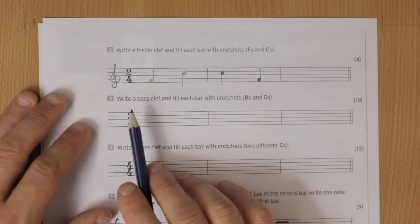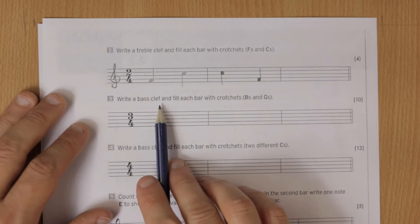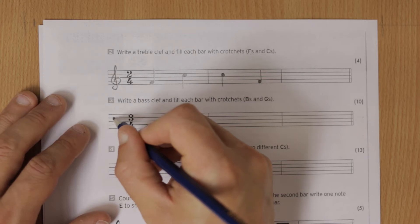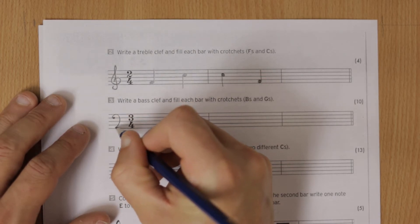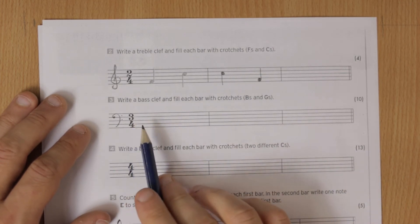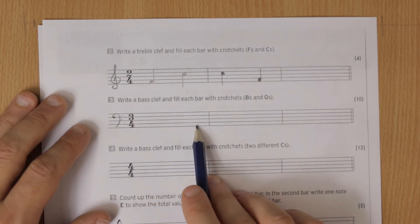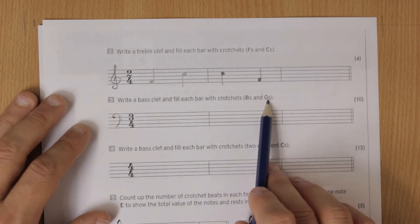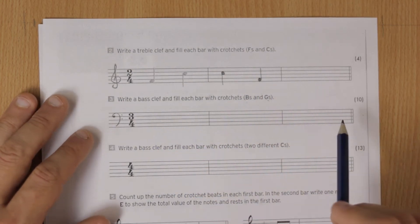This one: write a bass clef and fill each bar with crotchets. So a bass clef, I'm going to start on the fourth line, come up and around, and then two dots. Three-four, so we need three different notes, crotchets in each one, and it's B's and G's, so you work out where the B's and G's are.